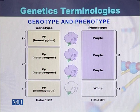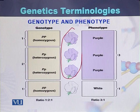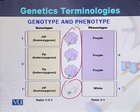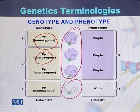Taking an example of genotype and phenotype: if there are three purple color flowers and one white color flower, these represent the phenotype. The purple color has two types of genotype: one is homozygous, represented as capital P and capital P, while the other is heterozygous, represented as capital P and small p. So purple color has two types of genotype — homozygous and heterozygous.